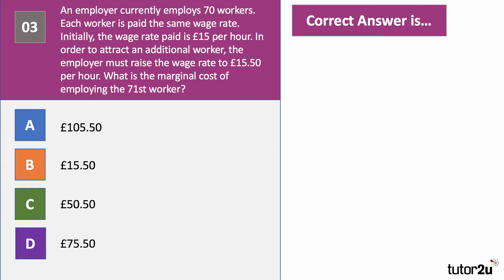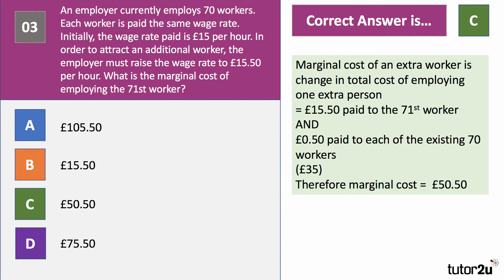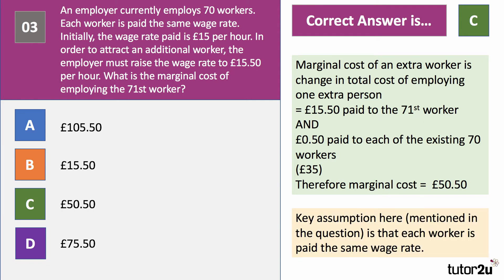The correct answer is C: £50.50. The marginal cost of labour is the cost of taking on one extra employee. The 71st worker costs £15.50 per hour, but 50 pence per hour extra also has to be paid to each of the existing 70 workers — that's another £35. Add that to £15.50 and we get £50.50. The key assumption in the question is that each worker is paid the same wage rate.